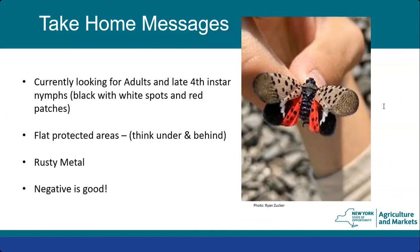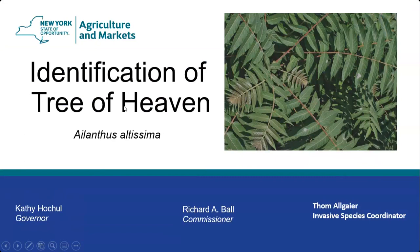Take-home messages for spotted lanternfly: we're currently looking for adults and fourth instar nymphs — the black and white spots and red patches. Look in flat protected areas — under and behind things, and on rusty metal objects. Don't be discouraged by negative survey results; if you go out and look and don't find anything, we need to know that too, because it helps us direct our survey resources. Negative surveys are good — I can't stress that enough.